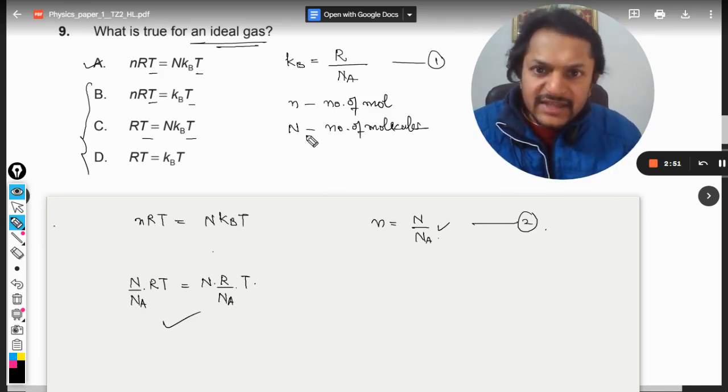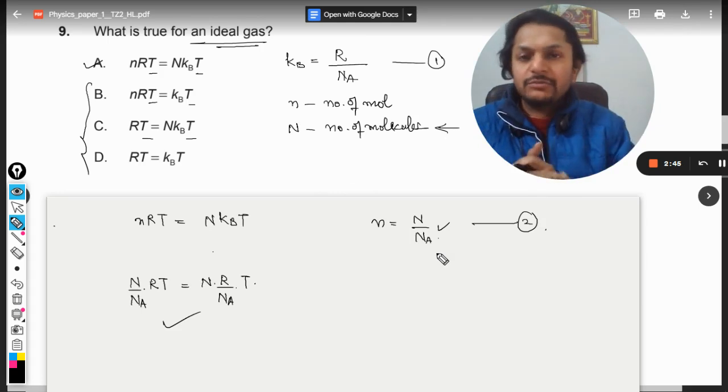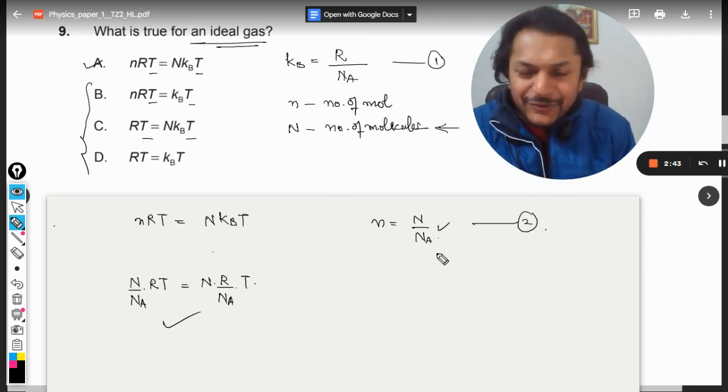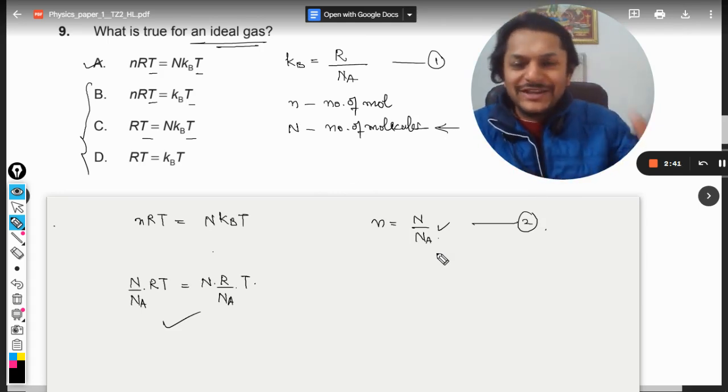I hope you understand this. Capital N is number of molecules. From here we have found the number of moles which have been related with Avogadro. Okay then, this is Professor Varun. Please subscribe to the YouTube channel. All the best, bye.